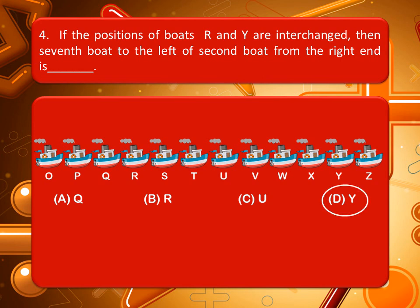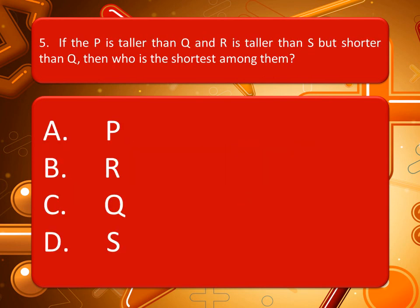Our next question: if P is taller than Q, and R is taller than S but shorter than Q, then who is the shortest among them? The correct answer is option D.